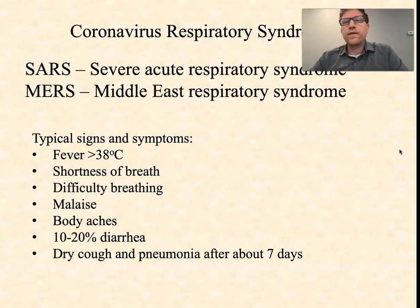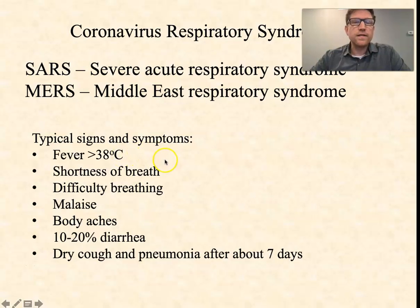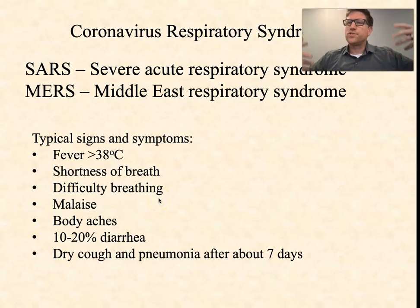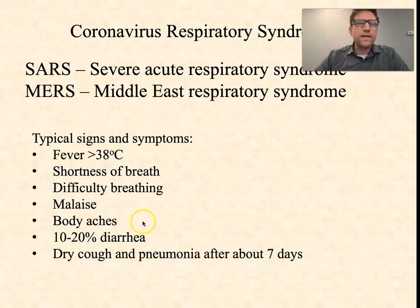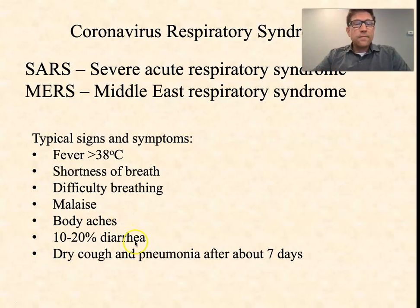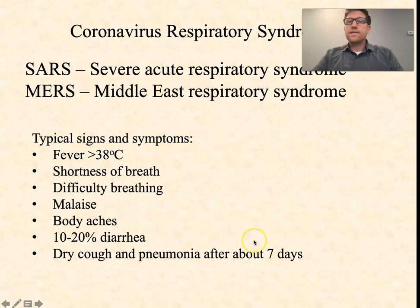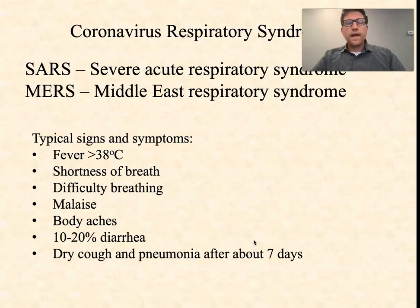The signs and symptoms of these coronavirus respiratory syndromes include a fever — a temperature greater than 38 degrees Celsius — shortness of breath or difficulty breathing, malaise (just feeling tired and not wanting to move or do anything), and body aches, which are very common. About 10 to 20 percent of cases induce diarrhea. After about seven days, symptoms also add a dry cough — a non-productive cough that doesn't produce a lot of mucus — and often pneumonia, as the virus tends to find its way down into the lungs.